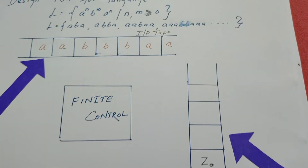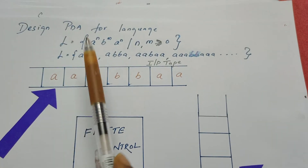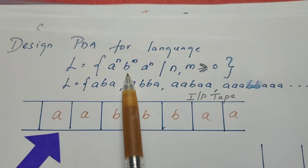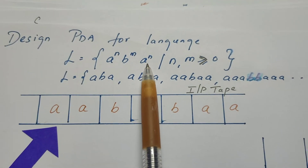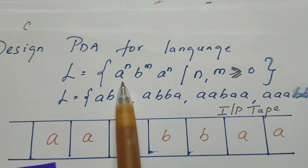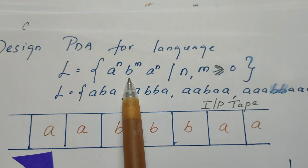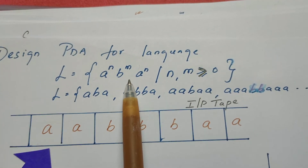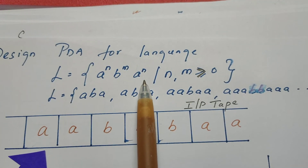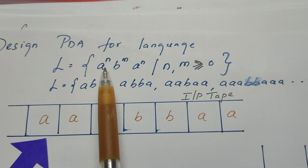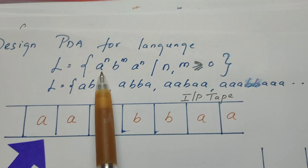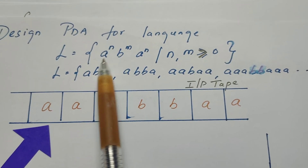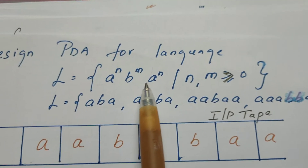Let us look into the language pattern. L is equal to a power n b power m a power n. It means there is a sequence of a's followed by a sequence of b's and once again followed by a sequence of a's. The count of a's to the left of b is the same as to the right of b.